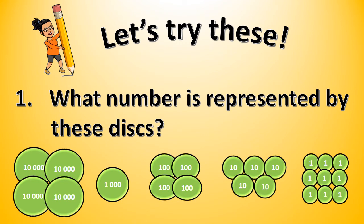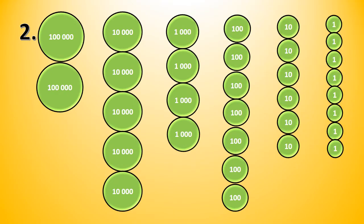Let's try if you understand the lesson. For number 1, what number is represented by these disks? Write your answer down. Are you done? Okay, next. What number is represented by these disks? Again, count the disks one by one, and then write your answer on your paper.